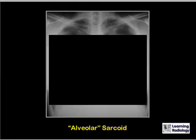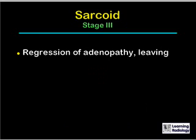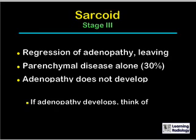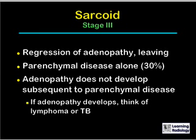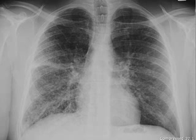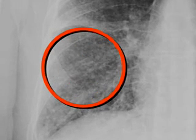Stage 3 sarcoid represents the regression of the adenopathy, leaving only the parenchymal lung disease. Generally speaking, adenopathy does not develop subsequent to parenchymal lung disease. If adenopathy does develop at that point, you should think of either lymphoma or tuberculosis. This frontal radiograph of a patient with stage 3 sarcoid shows no hilar adenopathy visible, but there is reticulonodular interstitial disease.